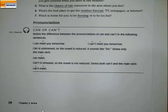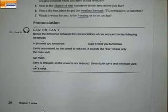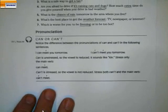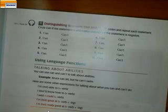Can is unstressed, so the vowel is reduced — it sounds like 'c'n.' 'I can meet you. I can do it.' If it's negative, can't is stressed, so the vowel is not reduced. Your job is to choose — you are going to listen to sentences and decide whether you hear can or can't. If you have your book, use the table to choose. If you don't, write can or can't, or A for can and B for can't. Listen and decide whether you're hearing the reduced form — positive — or the stressed form — negative.